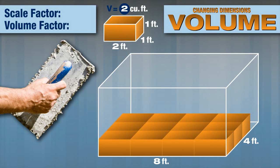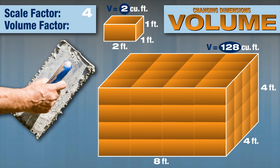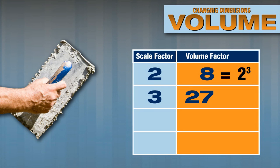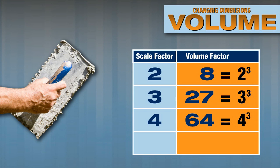If the scale factor is 4, the volume becomes 64 times the original volume. When the scale factor is 2, the volume factor is 8, or 2 cubed. When the scale factor is 3, the volume factor is 27, or 3 cubed. When the scale factor is 4, the volume factor is 64, or 4 cubed. So when the scale factor is n, the volume factor is n cubed.